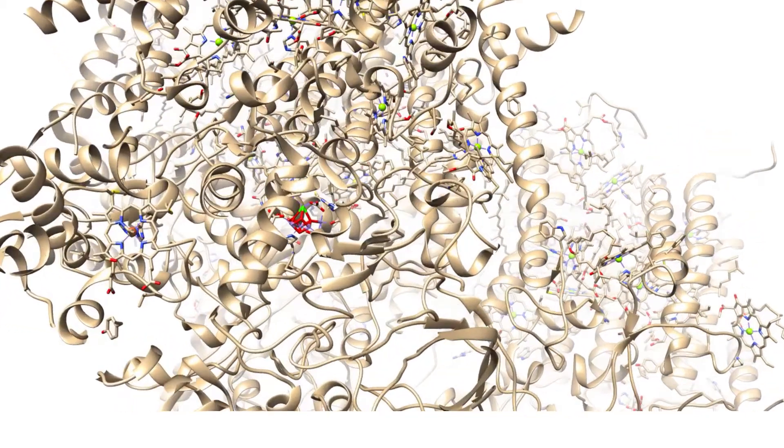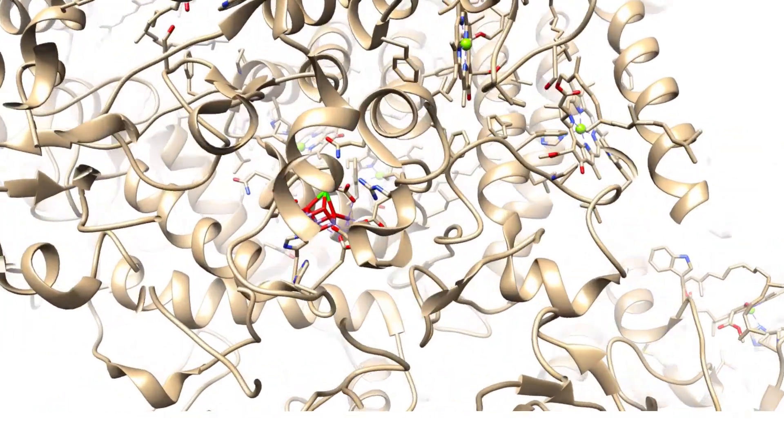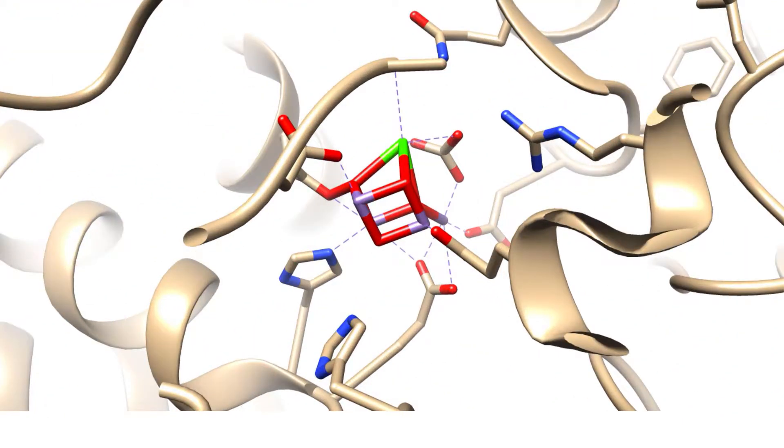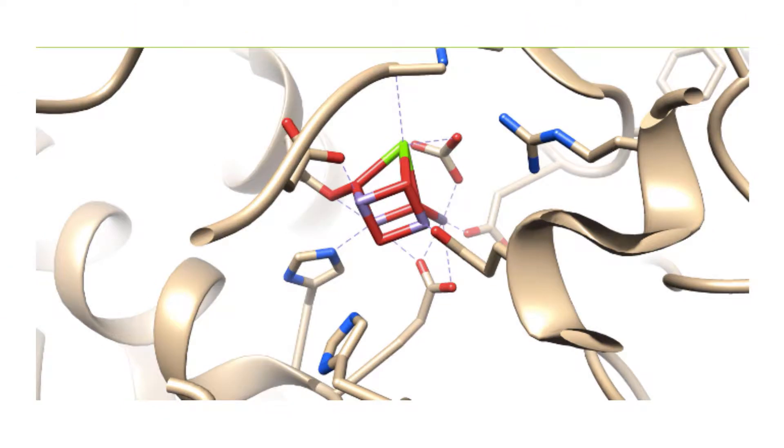The oxygen evolving center, also known as the OEC, is seen here. It is a cube-like shape containing four manganese ions and one calcium ion. The purple corners represent the manganese ions and the green corners represent the calcium ion. The red corners represent the oxygen atoms that are present in the OEC.